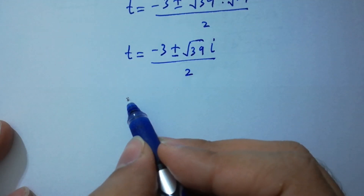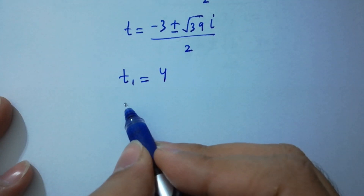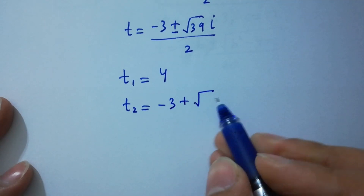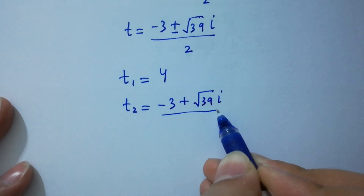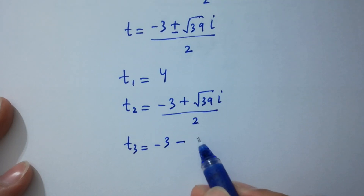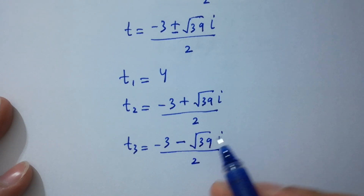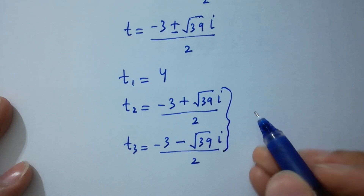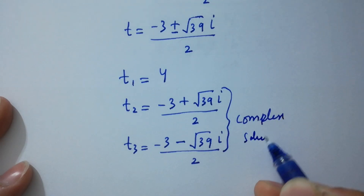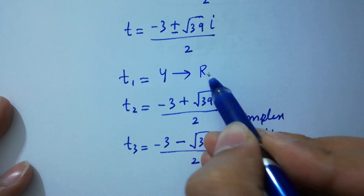So we have: T1 equals 4, T2 equals minus 3 plus square root of 39 times i over 2, and T3 equals minus 3 minus square root of 39 times i over 2, where T2 and T3 are complex solutions and T1 equals 4 is the real solution.